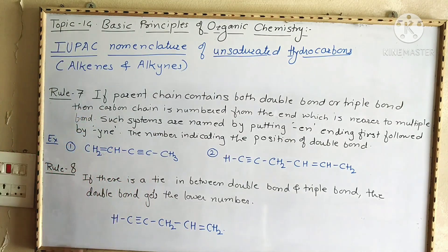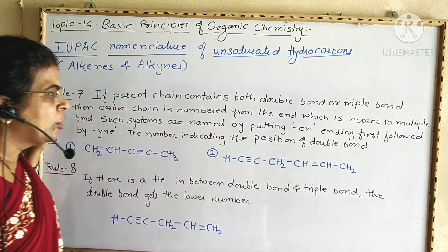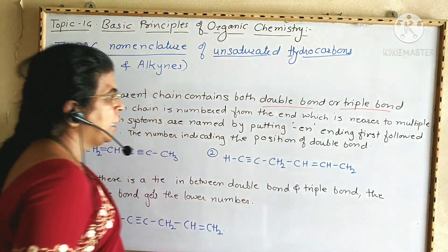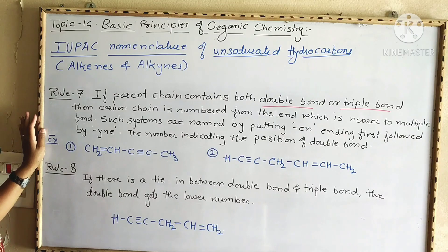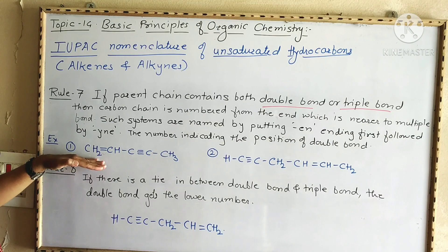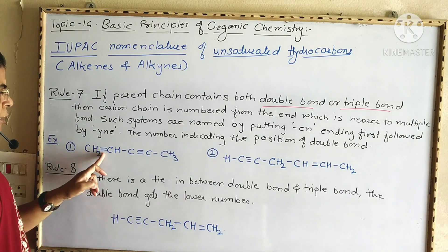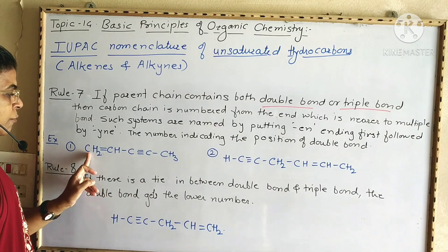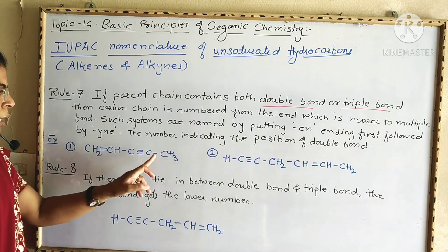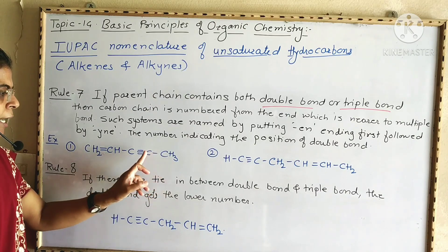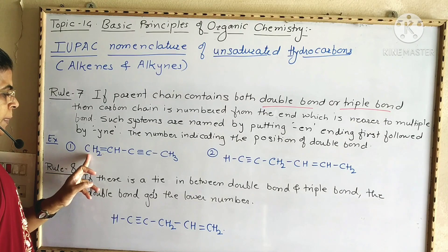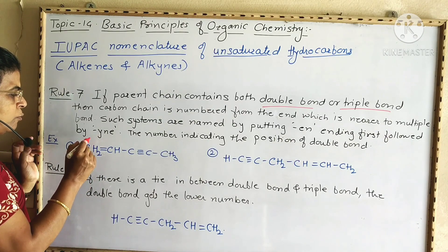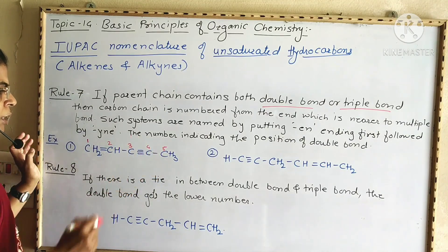Rule seven: if the parent chain contains both a double bond and a triple bond, the carbon chain is numbered from the end which is nearer to the multiple bond. In the example, there is both a carbon-carbon double bond and a triple bond. Numbering from one end places the triple bond at position two; from the other end the double bond is at position one. We number from the end nearer to the double bond: one, two, three, four, five.